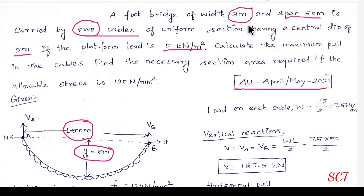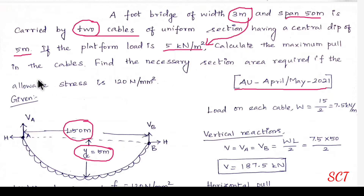If we use the UDL, multiply the breadth of the cable. Calculate the maximum pull in the cable — pull is the tension in the cable — and find the necessary section area required, that is the area of the cable.